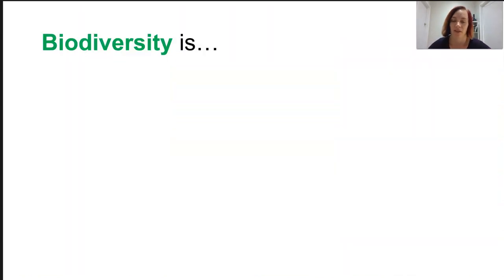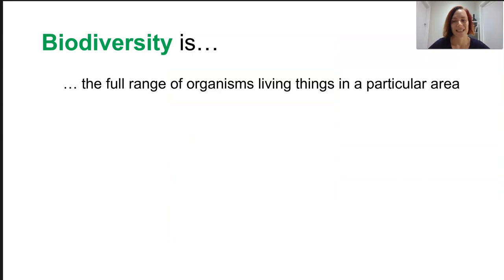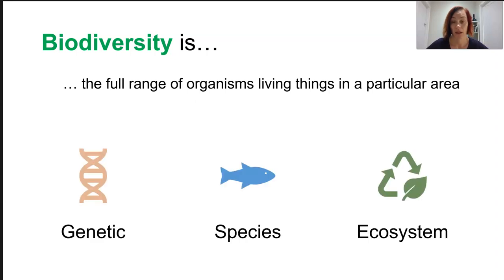Biodiversity can be described as many things, but overall it is the full range of different living organisms in a particular area. It can be described at a number of different levels including genetic, species, and ecosystem diversity.